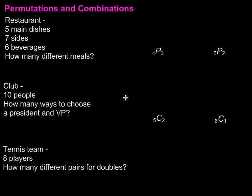In this video, we're going to take a look at permutations, combinations, and also the fundamental counting principle. The fundamental counting principle says that if we have a number of ways to choose something, we can multiply each piece to figure out how many different combinations there are.